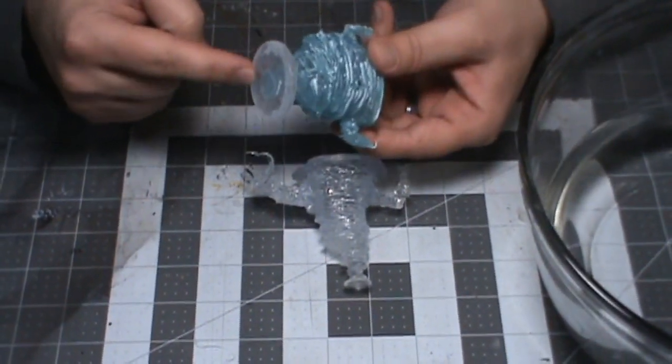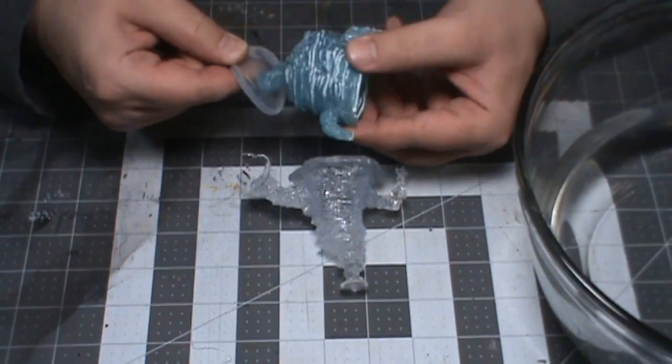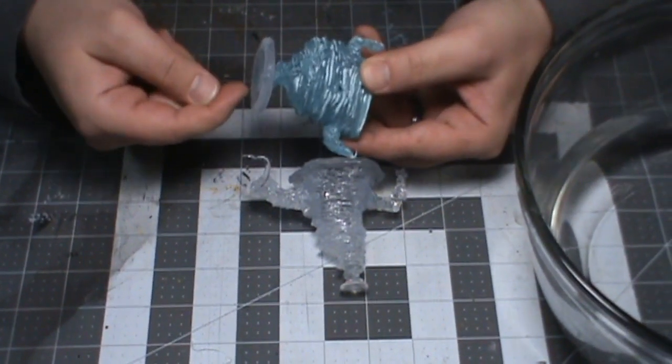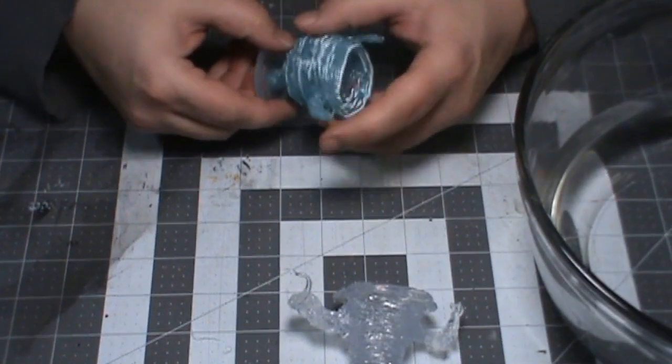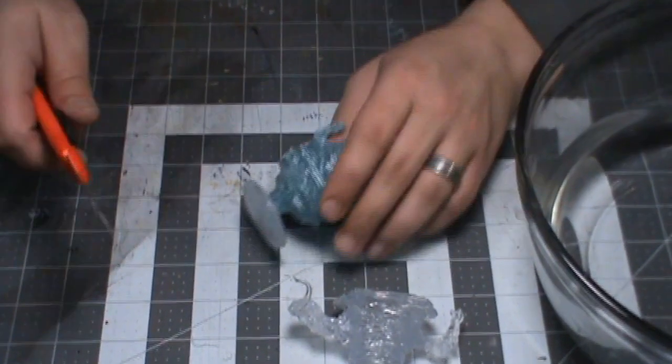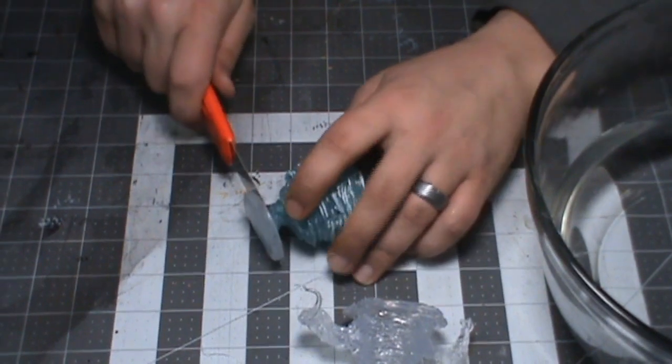At this point if you're not interested in making a base you can just go ahead and skip ahead to painting. The next section I'm going to show you how to make a base. I had made one out of hot glue on my first attempt so I'm just going to go ahead and cut that base off and then show you how I did it.